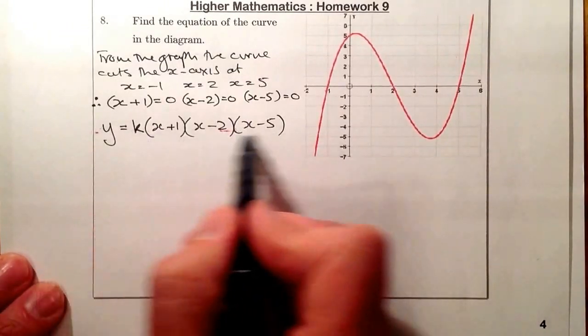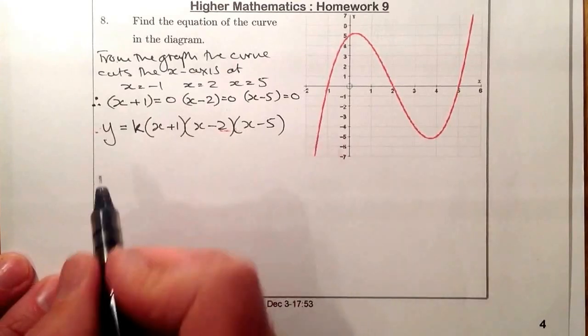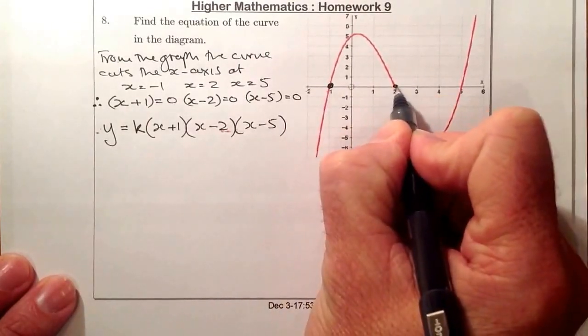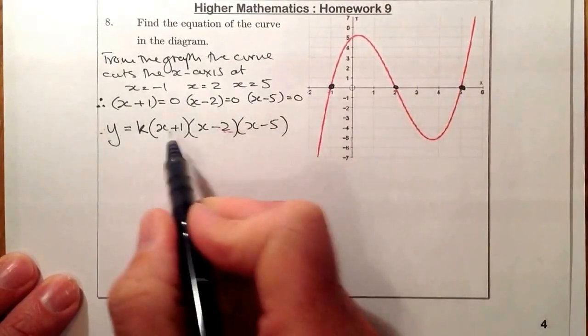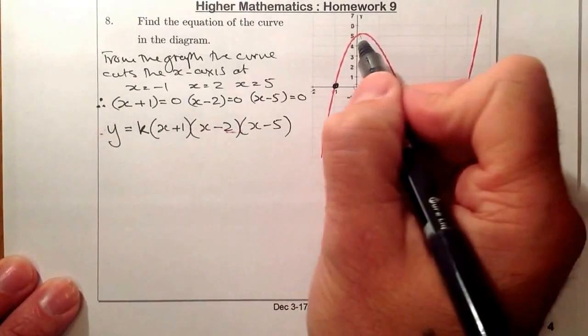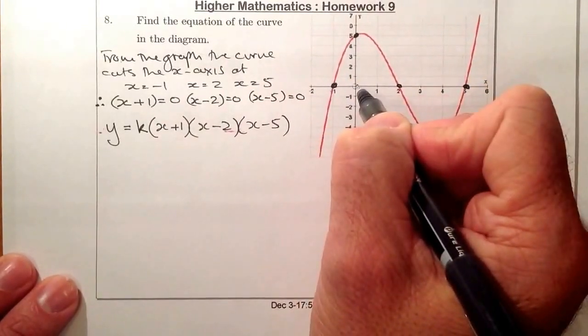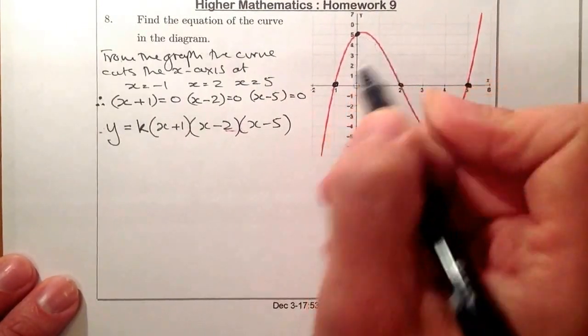So when I've set this up here, what I'm going to do is use another clue that I've been given. So the first ones that I've used would be that one, that one, and that one to get my factors. What I'm now going to use is this point here, and that's the point 0, 5. That's one that I'm going to use now.